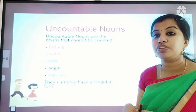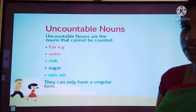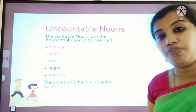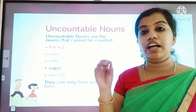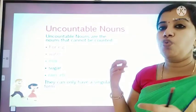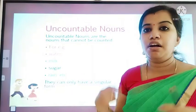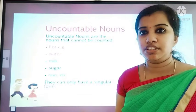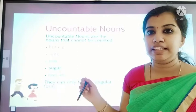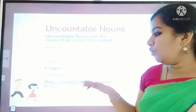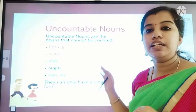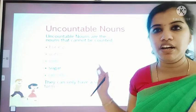Uncountable nouns can only have singular form. We don't say 'waters,' 'milks,' or 'sugars' — that is wrong. We only say water, milk, sugar. Uncountable nouns have only singular form.